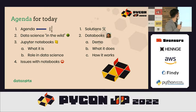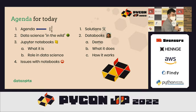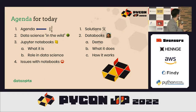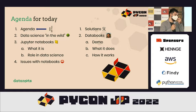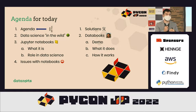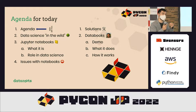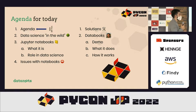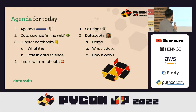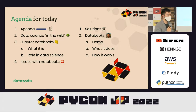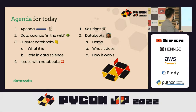So this is the agenda for today. We're going to talk a bit about data science in the wild. We're going to talk about Jupyter notebooks — the previous talk was about how Jupyter notebooks work, like the sockets and everything. We're going to focus really on the actual artifact, the actual notebook file itself. We're going to talk about what it is, the role of Jupyter notebooks in data science. We're going to discuss some issues with notebooks as well, some existing solutions, and then I'm going to introduce a tool that I built called Databooks.